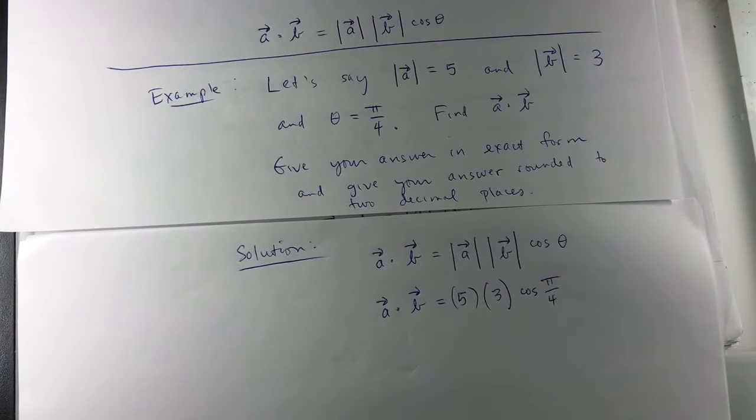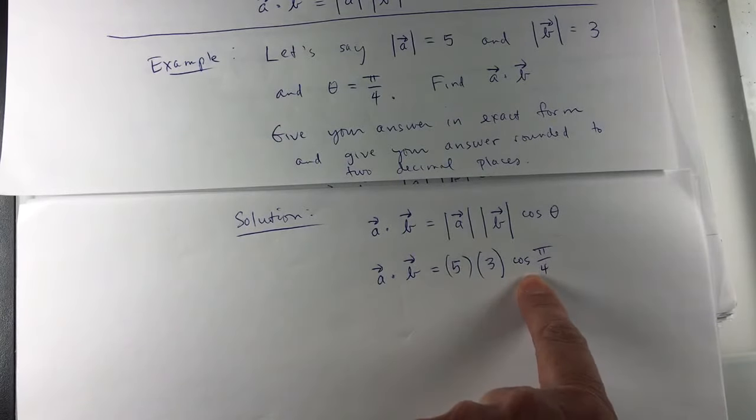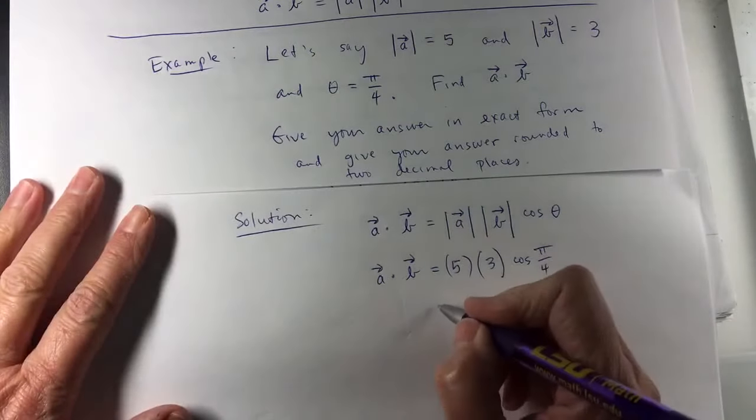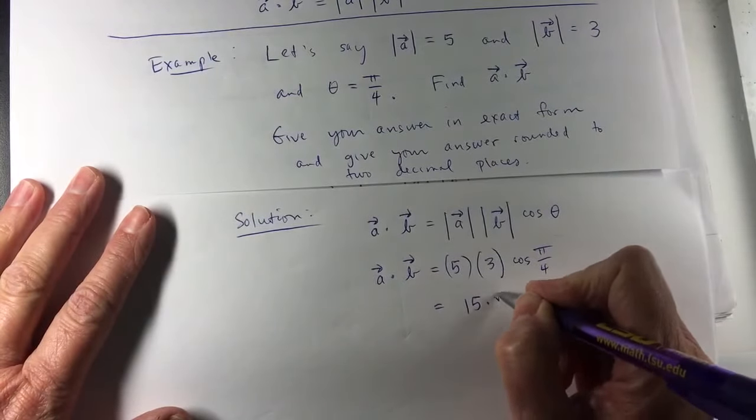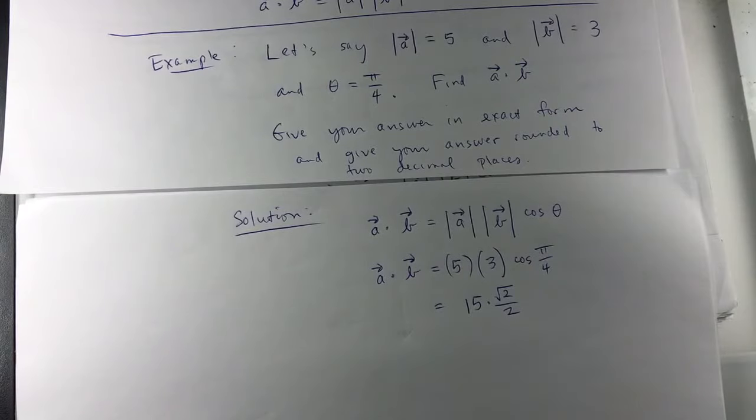Since it said exact form, to me that means do not use your calculator. It means I have to recall that special angle chart from trigonometry, and the cosine of π over 4 is square root of 2 over 2, or 1 over the square root of 2.